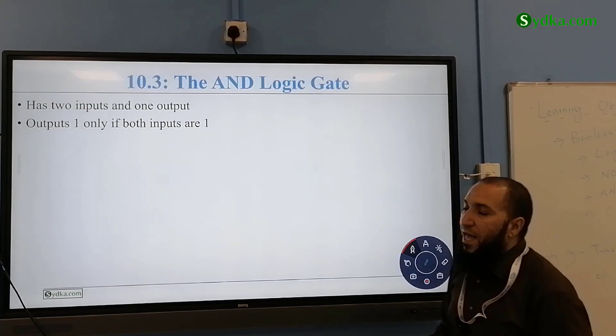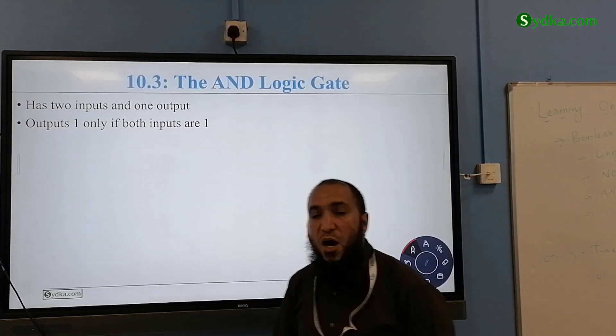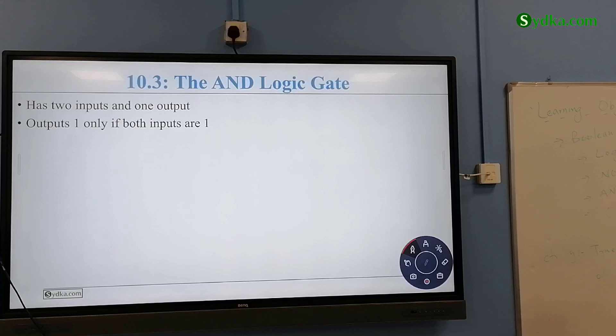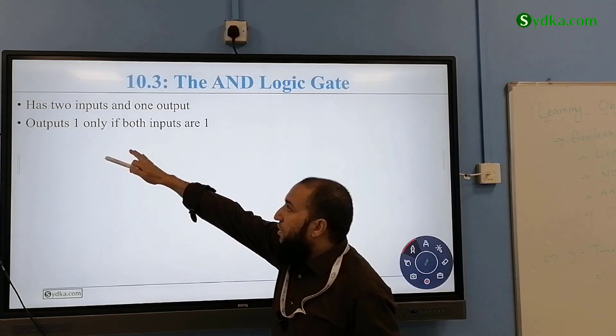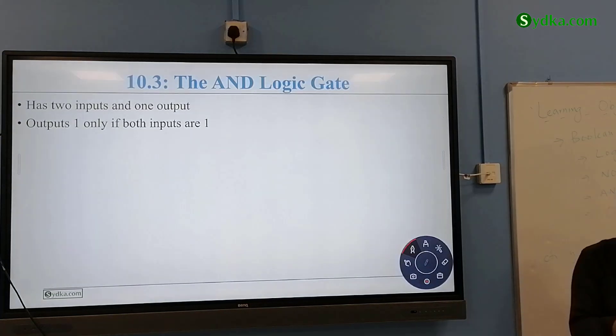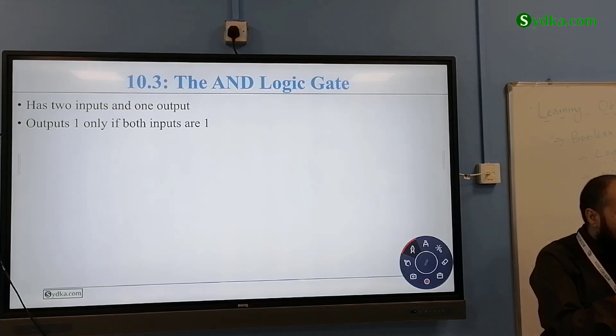The second gate we're going to use is called an AND gate. It has two inputs, unlike the NOT gate which has one input, but it has one output the same as that one. It only outputs one if both inputs are one.